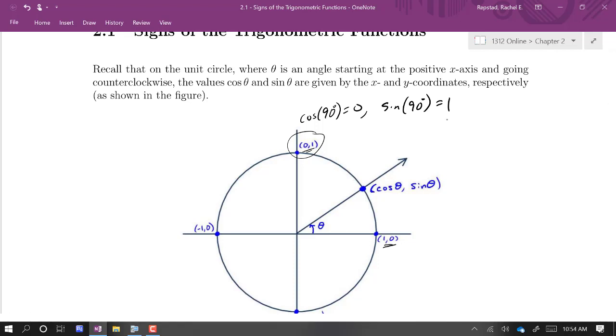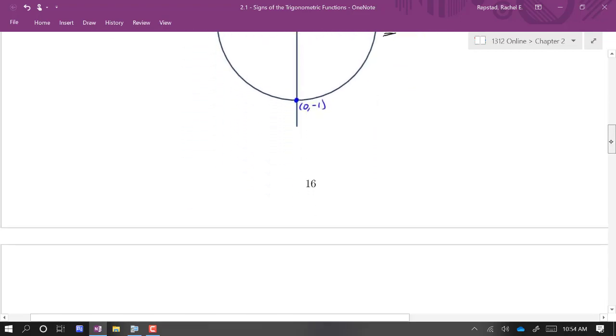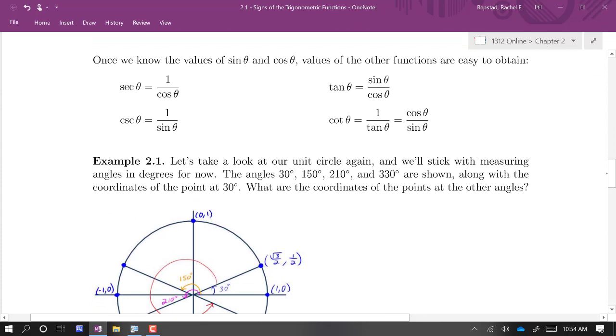We focused primarily on the first quadrant in the first semester, but now we're just going to branch out. Once we know the coordinates or the values of sine and cosine, we can find the values of the other trig functions just by their definitions. Secant and cosecant are the reciprocals of cosine and sine respectively. Tangent is the ratio sine over cosine, and then cotangent is the reciprocal of that.